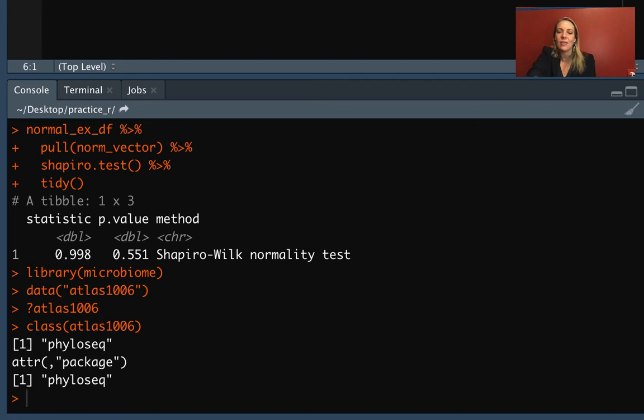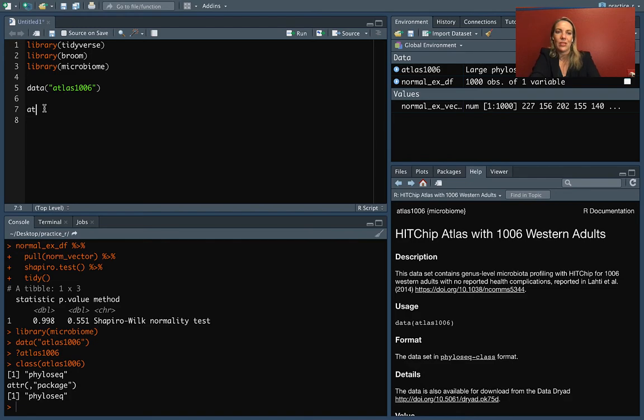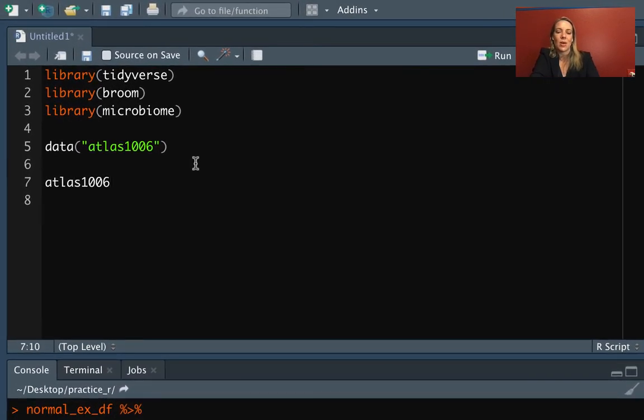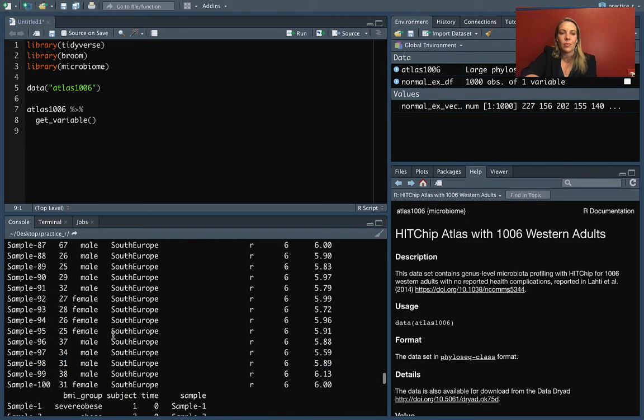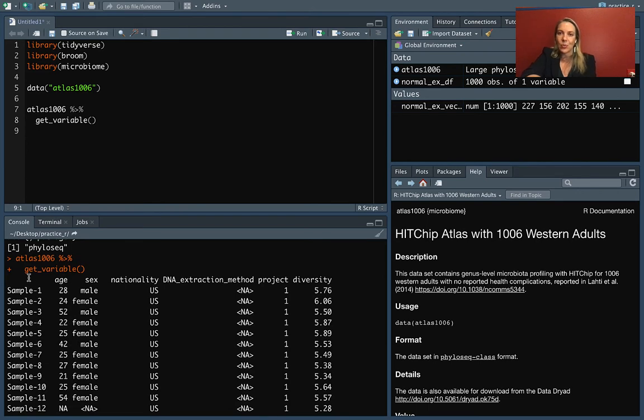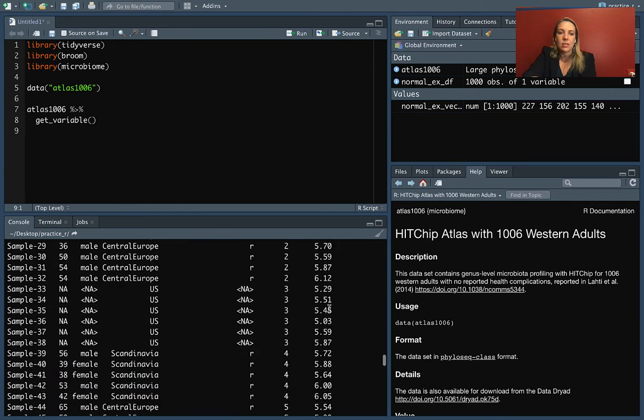This is a class that's used a lot for genomics style data in Bioconductor packages. We can check the class of Atlas1006. It turns out that there are some functions that let us pull out and extract things from that special type of data. The get_variable function will let us pull out information about the study subjects.